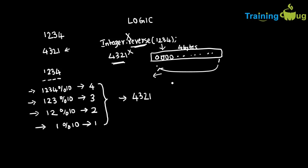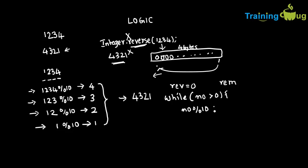How do we perform an operation on these remainders so that we get the actual reverse of a number? We take two variables: one is 'reverse', initialized to 0, and one is 'remainder'. We run a while loop: while number is greater than 0, first we get the remainder as number % 10. Then we update reverse as: reverse = reverse * 10 + remainder. After that, we update number by dividing it by 10.